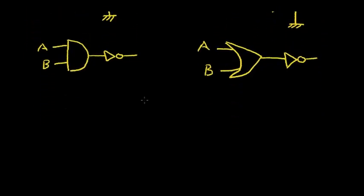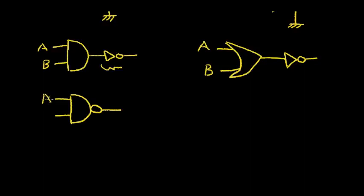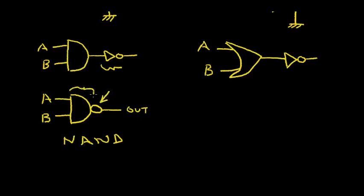This is a rather complex symbol, so we can simplify it. Rather than drawing the entire inverter, we'll just put a bubble. This becomes the conventional NAND gate symbol, with input A, input B, and output. NAND means NOT AND — this bubble is the NOT symbol and this part is the AND gate.